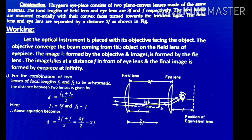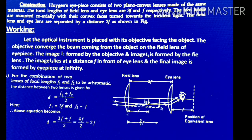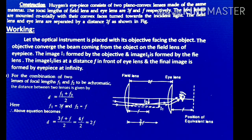The optical instrument is placed with its objective facing the object. It is placed with its objective — that means the field lens — facing the object, which means the incident light. The objective converts the beam coming from the object onto the field lens of the eyepiece. These are the incident rays, which are convergent beams passing through the field lens. After passing through the field lens, the image is produced. The image formed by the objective is I1, and due to the field lens, image I1 is produced. The image I2 is also produced by the field lens.